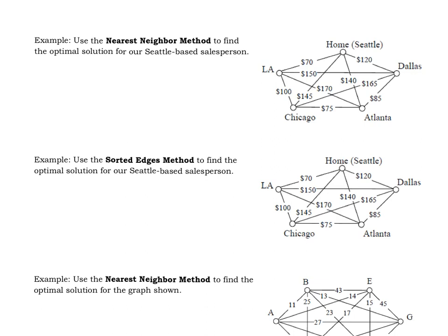Now, as we go through these, I'm going to be reading to you from the method on the previous page of your notes on page 12. I'm just reading word for word what's there, and then I'm going to do it on this example. So for this first one, we're going to use the nearest neighbor method to find an optimal solution for our Seattle-based salesperson. We want to start in Seattle, we're going to start at home, and so that's our starting spot.